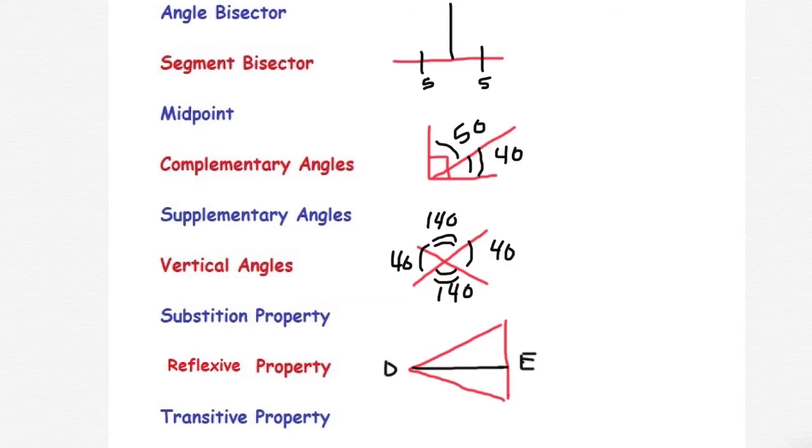Lastly, the reflective property. We have a common line, D-E. What reflective property means is D-E is congruent to itself, D-E.